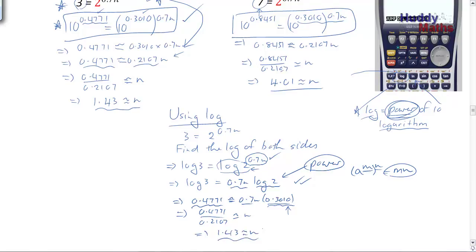You've got to keep your wits about you — the log is a power. Because we're going to drop the explicit statement '10 to the 0.3010 is 2' and call it log of 2, remembering it's a power. So all the rules for powers will apply to logs. We'll do that in the next presentation.